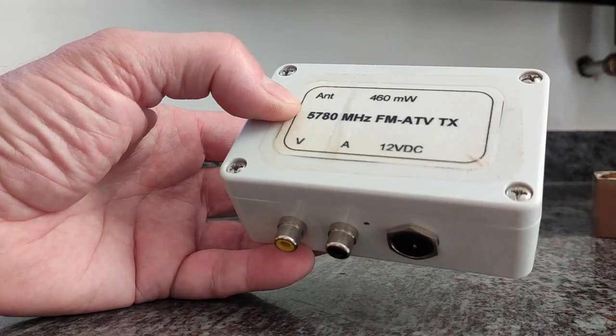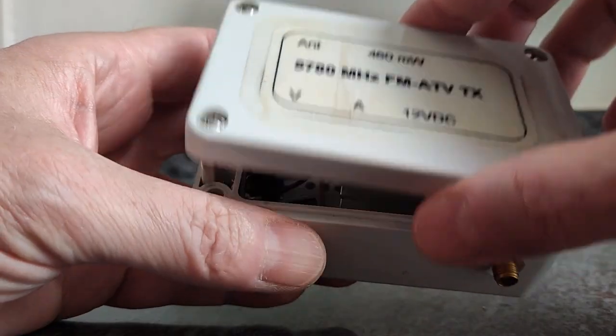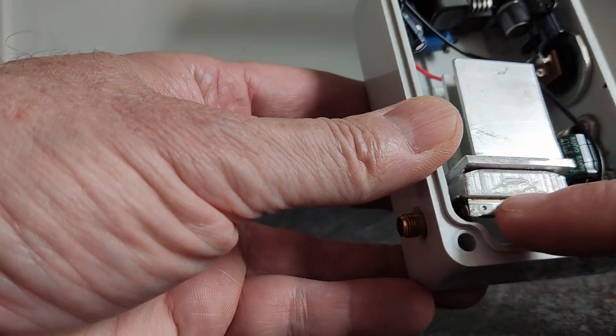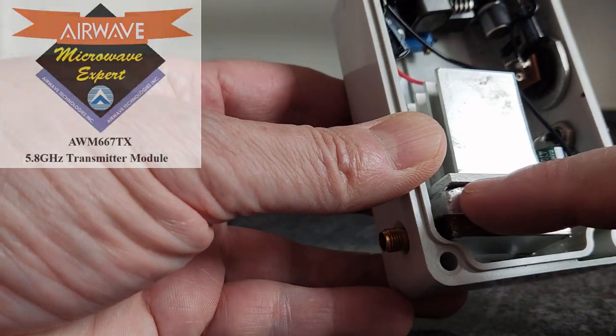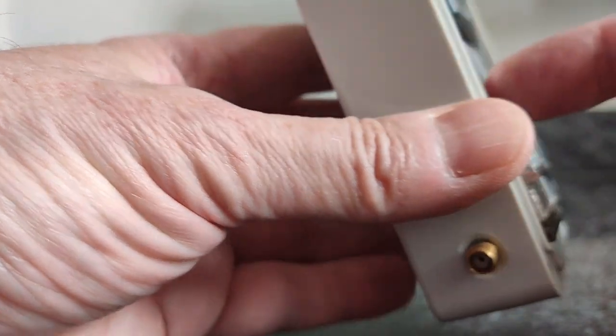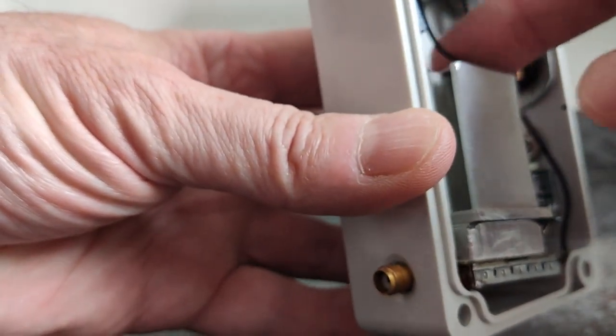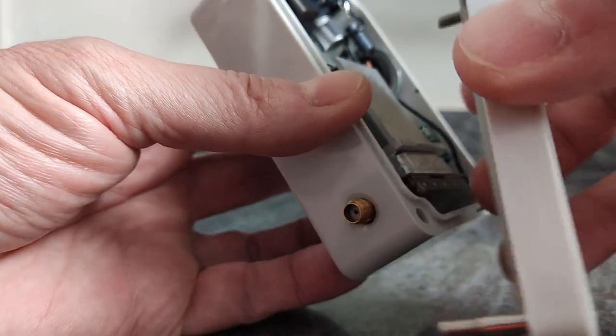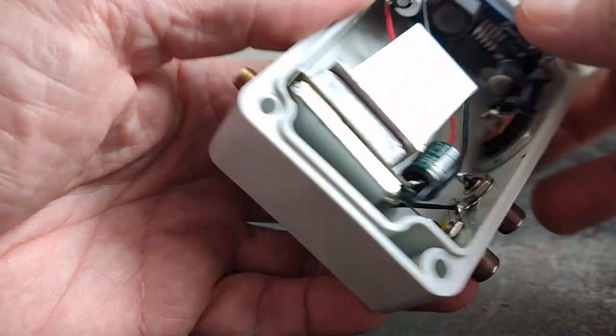Let's open it and this is what you see inside - two modules. One is the actual transmitter, this one with a block on it, a heatsink, and I added an additional heatsink to keep it cool because you have not much convection in this closed enclosure.